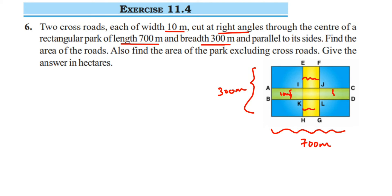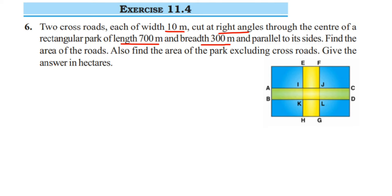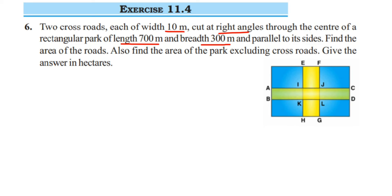We have to find the area of the road first, and then find the area of the entire park excluding the roads. I have marked the roads as ABCD and EFGH, and the intersection region as IJKL. I'll explain why we need IJKL shortly. Now let's find the area of the park first.